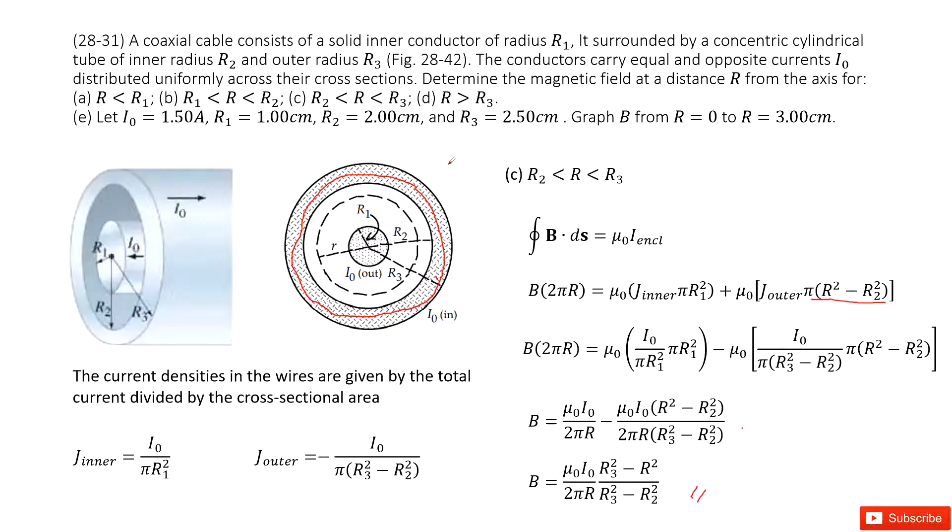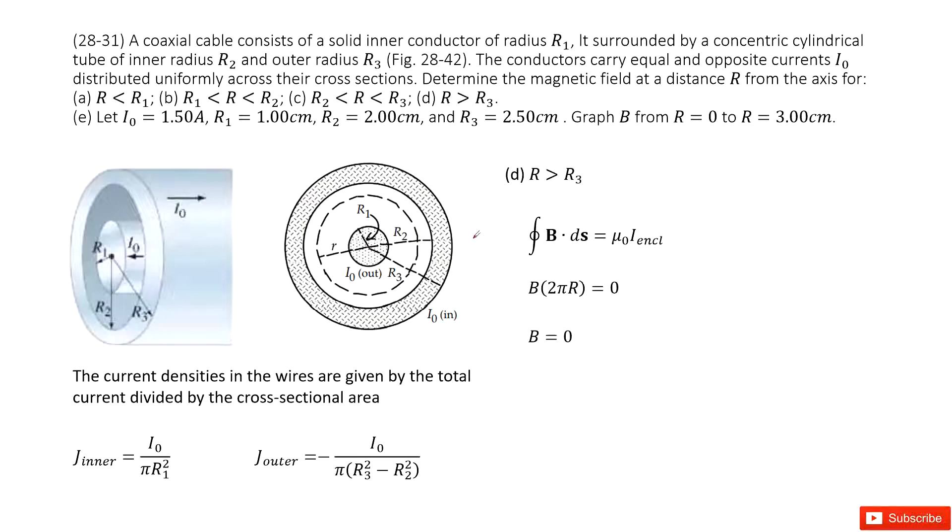The next one: r is larger than r3. We draw the enclosed path. B times the enclosed path 2πr should equal zero because this is out and this is in—they are in opposite directions. When we add them together, it's zero, so B equals zero.